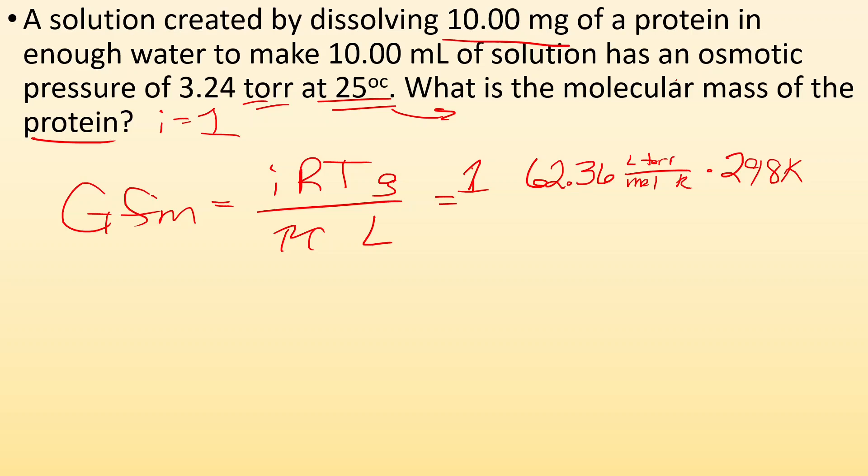Well, 10 milligrams is going to be 0.01 grams. Now, divide that all by the osmotic pressure, which is 3.24 torr times the liters of solution. Well, 10 milliliters of solution is going to be 0.01 liters. Now, when I plug and chug and I get all that, I get 5,736 grams per mole.